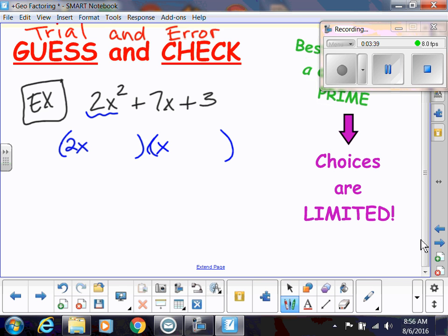And then in order to get 3, I could have had 3 and 1. That's the only combination, right? So 3 and 1. Now here's where the order that we put the 3 and the 1 matters because if I had the same first terms, 2x and x, but then I switched the 3 and the 1, those would be very different answers. So I could have something like 2x plus 3, x plus 1, or 2x plus 1 and x plus 3.